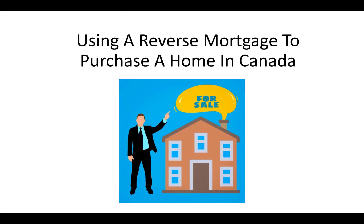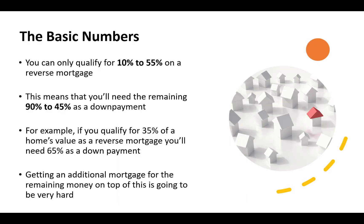Now, in this video I'm going to walk you through using a reverse mortgage to purchase a home in Canada. You can only qualify for 10 to 55% on a reverse mortgage, which means you'll need the remaining 90 to 45% as a down payment. For example, if you qualify for 35% — which is fairly common — you'll need the other 65% as a down payment. Getting an additional mortgage for the remaining money is going to be very hard, if not impossible, so you will have to have the down payment to make up the rest.